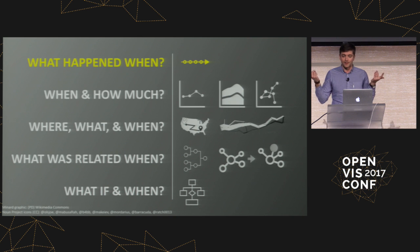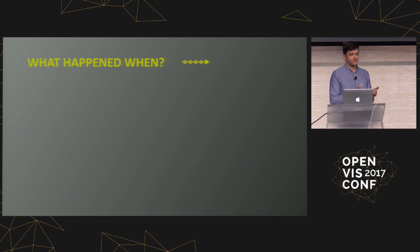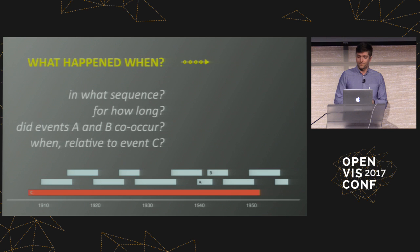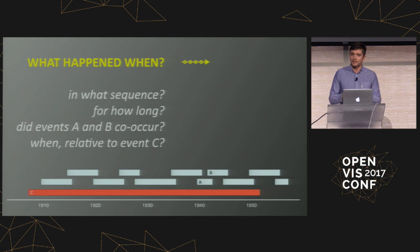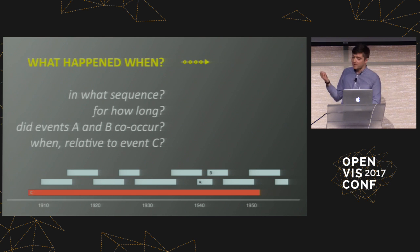Of course, there are many instances where you combine a timeline with another chart type — Minard's map of Napoleon's March is one example. But if we focus on the deceptively simple question of what happened when, we arrive at more specific questions: in what sequence did these events occur? For how long did they occur? Did events A and B co-occur — how did they overlap, and what was the nature of that overlap? And when did they occur according to some common baseline, like event C?